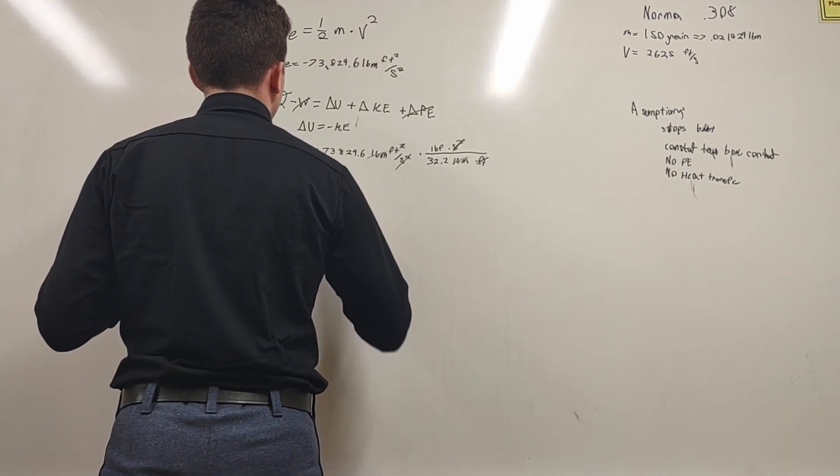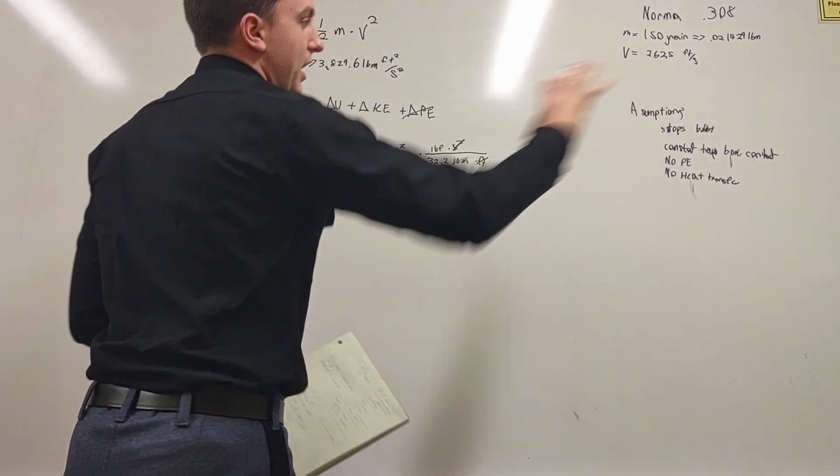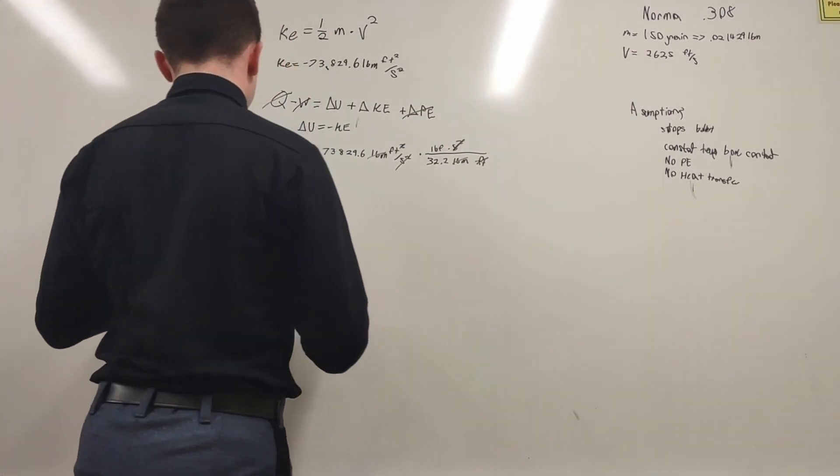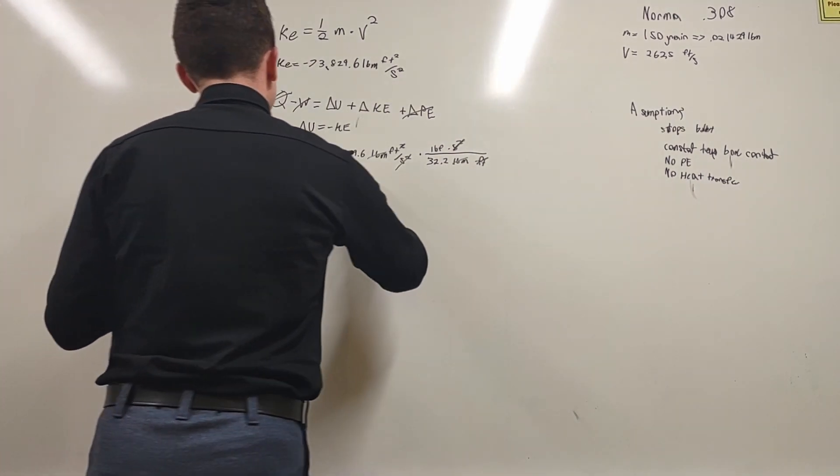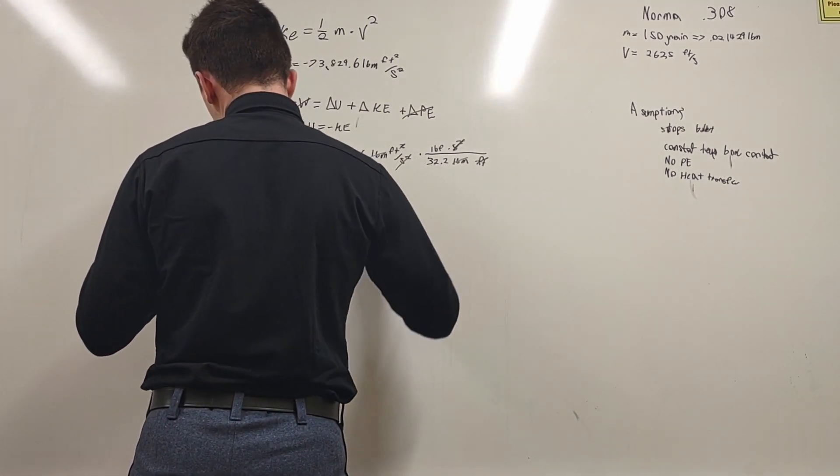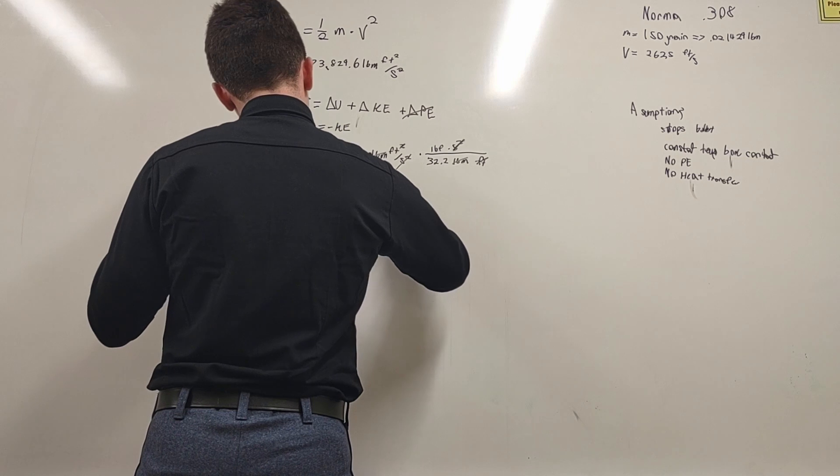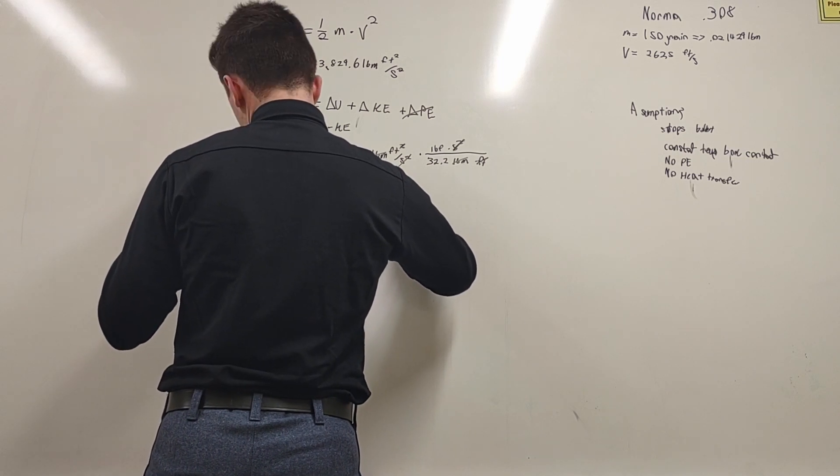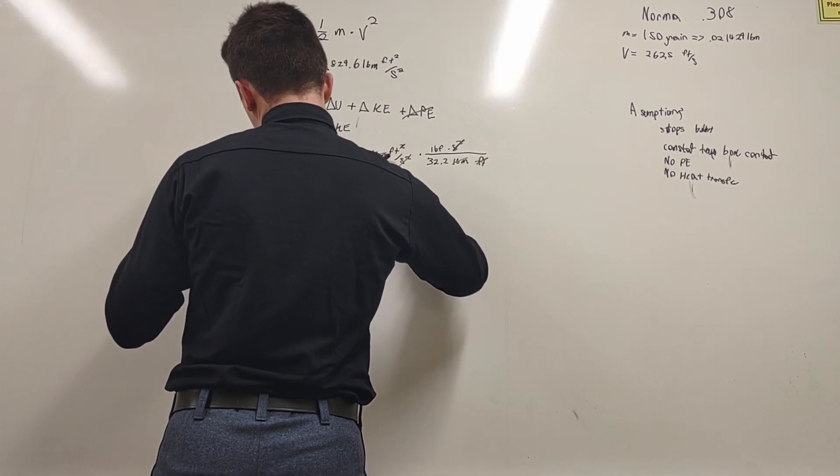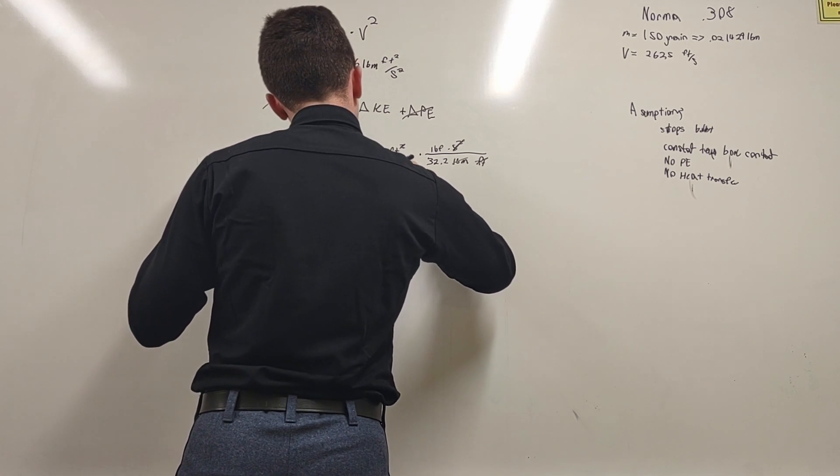Internal energy - the energy that the bullet applies to whatever you're throwing it at - is equal to 2,292.8 foot pounds.